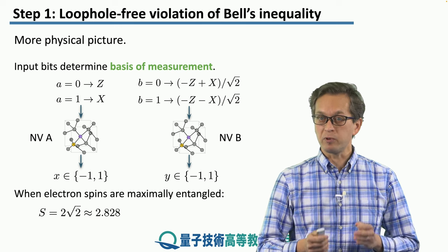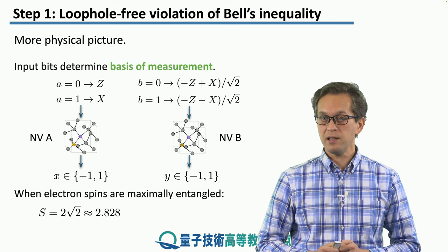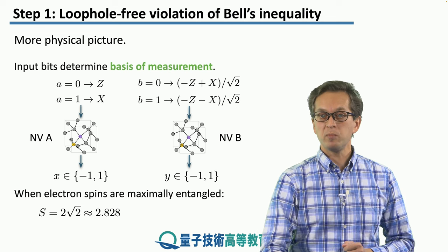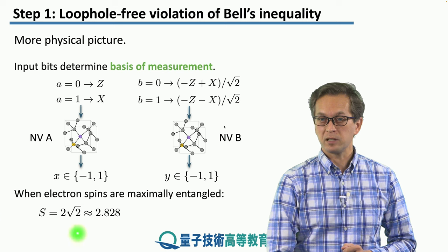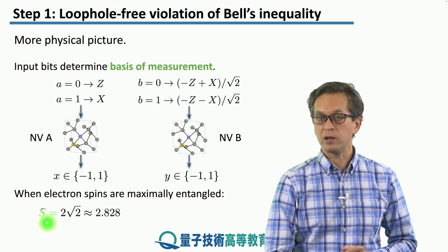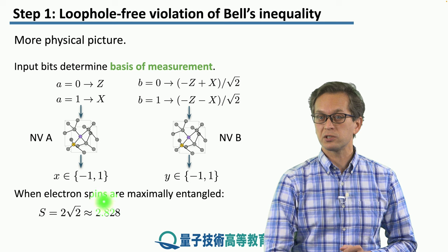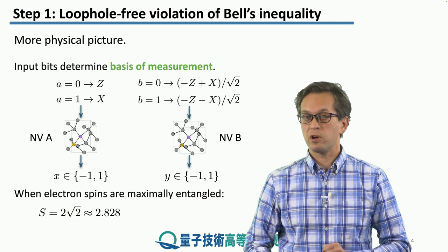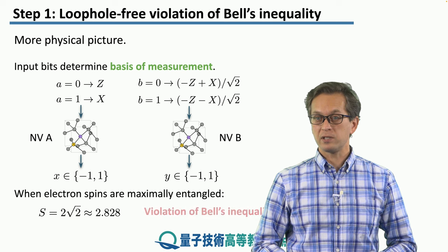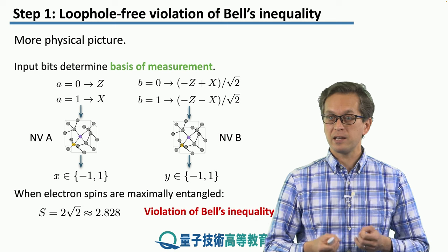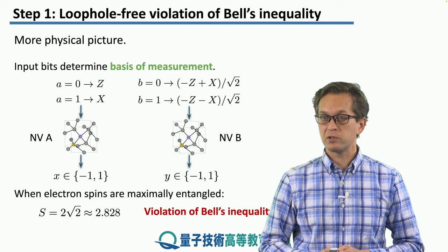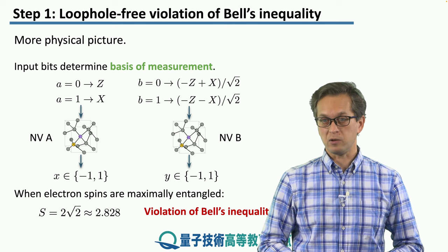If we prepare the qubits in the right state — in this case a maximally entangled state — we measure S, the Bell violation, or the value of the Bell correlation function, as 2 times the square root of 2, which is approximately 2.828. So we see that in this case we actually violate Bell's inequality. We measure a correlation much stronger than predicted by the Bell inequality.